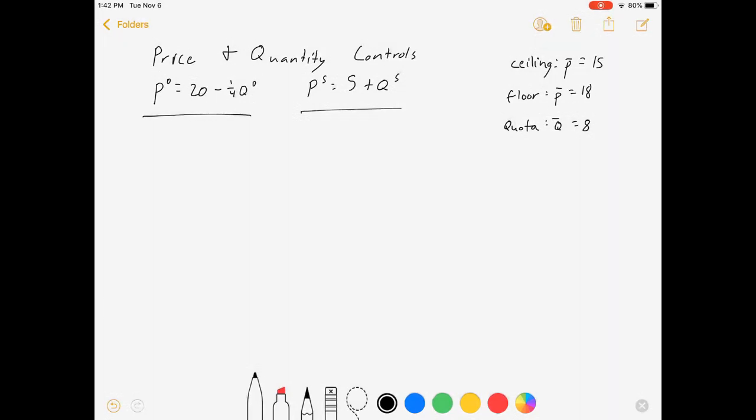And we're going to explore what happens when we implement a price ceiling at $15, a price floor at $18, or a quota at $8. So let's start with our ceiling. When we have these controls, we don't actually need the equilibrium just to figure out our shortage and surplus. We would need it potentially to calculate something like producer surplus or consumer surplus, but I'm not going to get into that right now. Let's just graph our functions and we'll go from there.